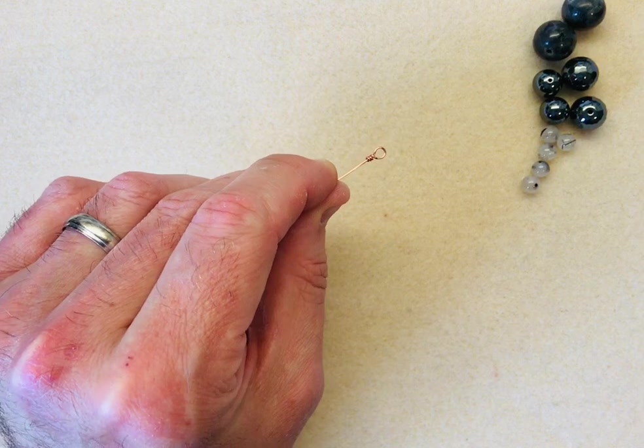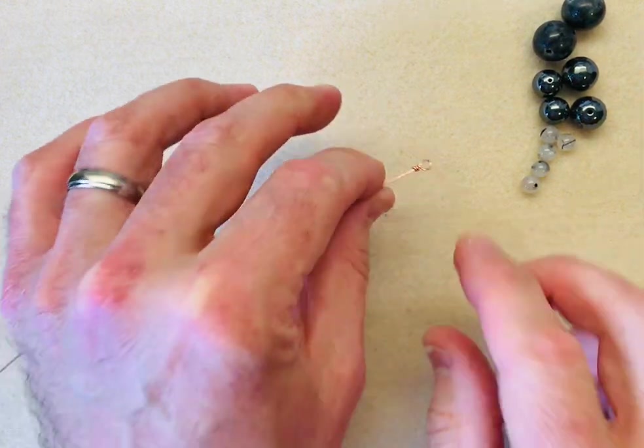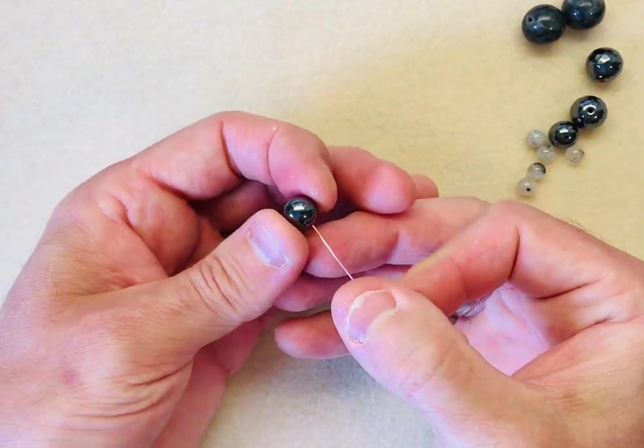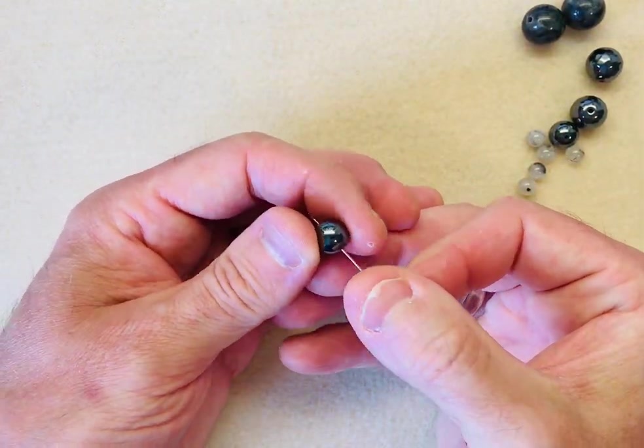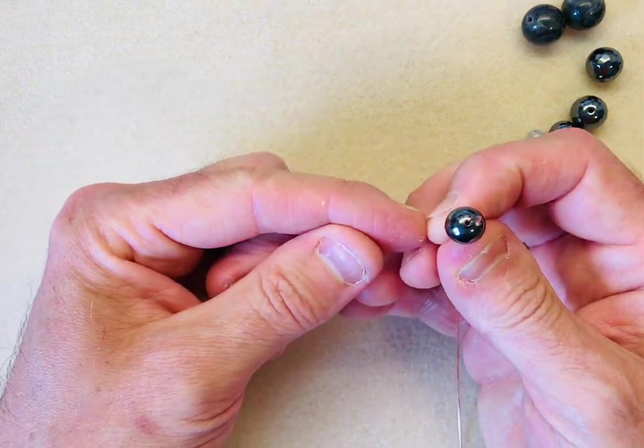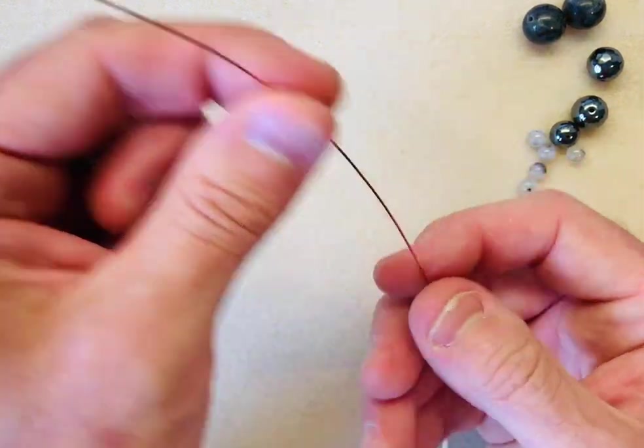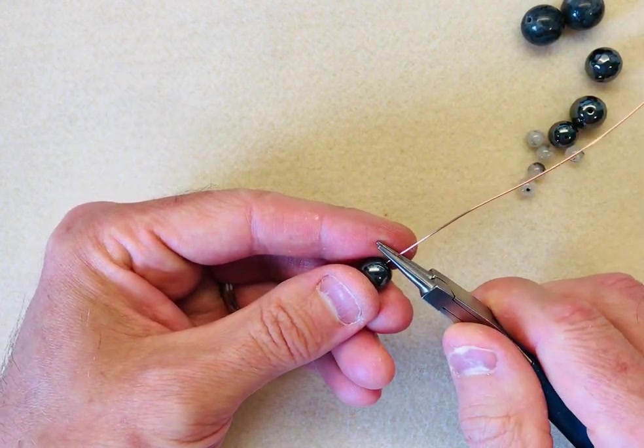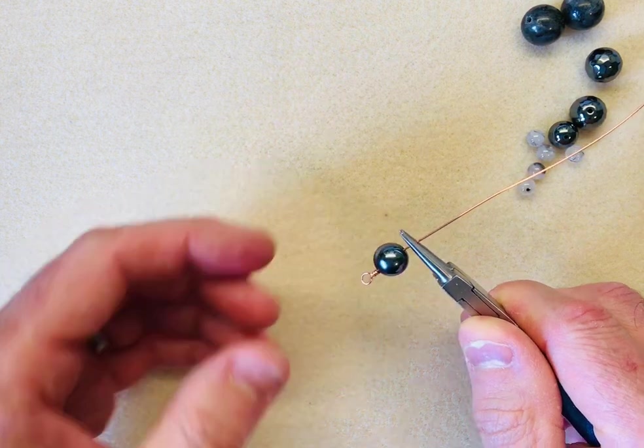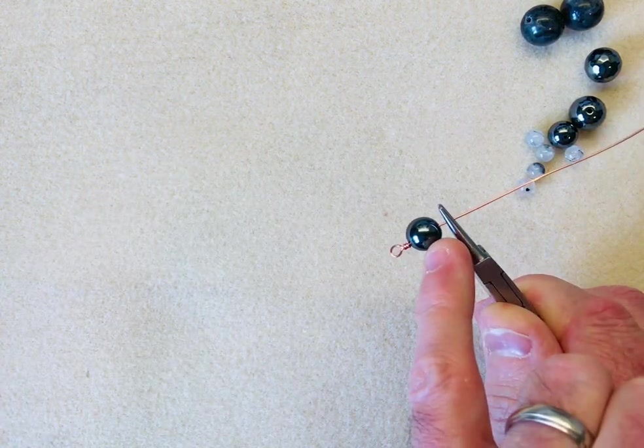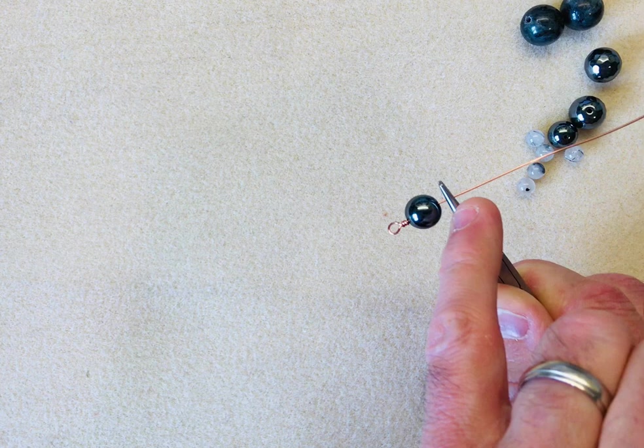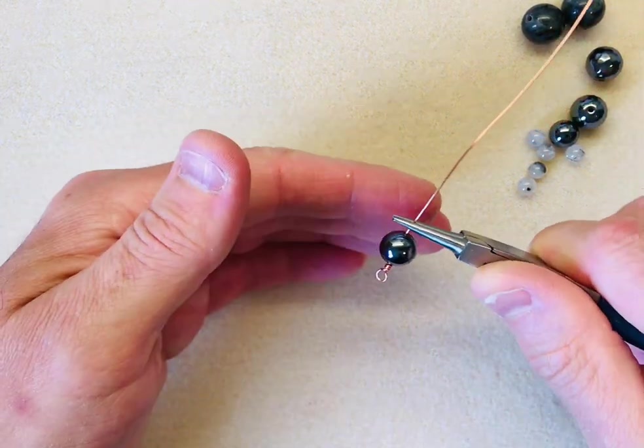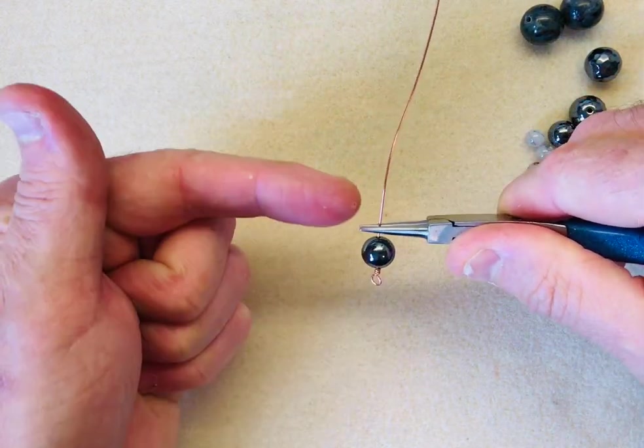So next we need to choose our bead. I'm going to go for the 10 millimeter hematite. Can you see that the 0.6 millimeter goes on very easily on the hematite there. Slide that down and then to do the second part of the link I'm going to place my pliers, again same position on the plier, and I'm going to leave the same amount of space between the bead and my plier as we left at the beginning to have our little coil on.